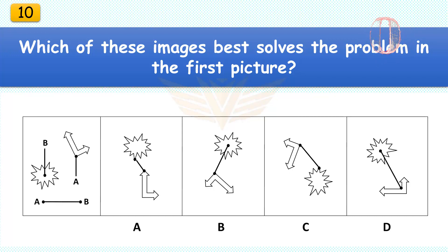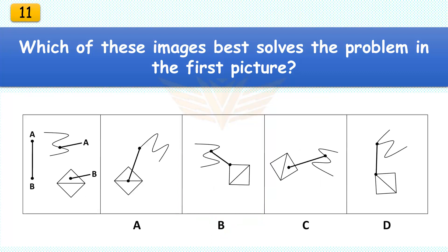The correct answer is B. Rotate the L arrow 180 degrees and move the electric bubble up.